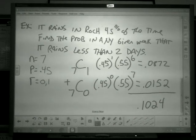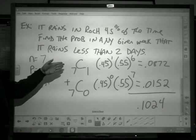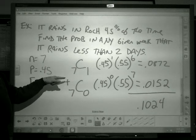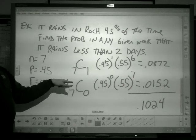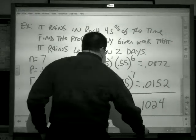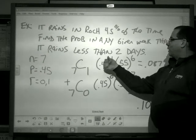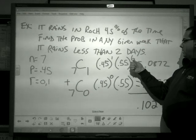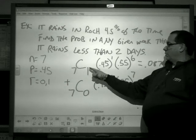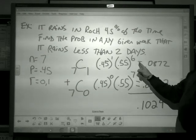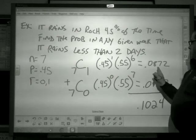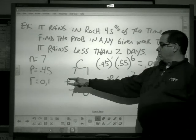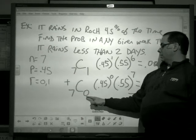Now we write out, we have to do two separate problems. The probability that we could get it in one day, or the probability we might have it on no days. Using our formula: 7C1. What do we want to happen, how many times? What do we not want to happen, how many times? I want it to rain one and not rain six. Type this in, we get .0872.